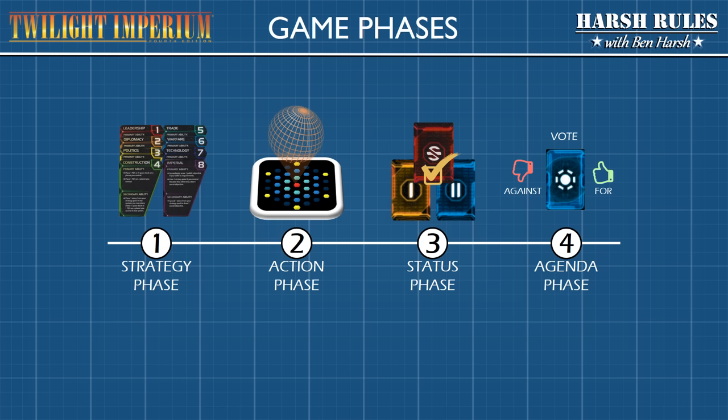In the status phase, players score objectives and earn victory points, as well as clean up for the next game round. And finally, when the first player reaches Mechatol Rex and removes the custodian token, comes the agenda phase. In this phase, players vote on political agendas which can modify the rules of the game.